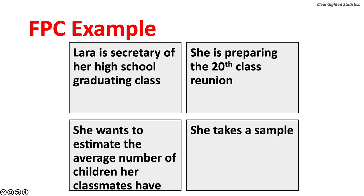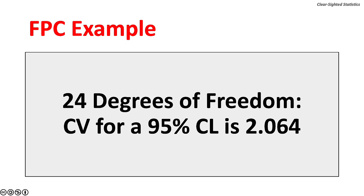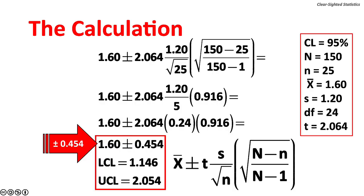Let's construct a confidence interval using the finite population correction factor. Lara is secretary of her high school graduating class and is preparing for the 20th class reunion. She wants to estimate the average number of children her classmates have. The sample mean is 1.6 children and the sample standard deviation is 1.2 children. She takes a sample of 25 graduates from a population of 150 graduates. There are 24 degrees of freedom (25 minus 1). The critical value for T at a 95% confidence level is 2.064. The FPC is 0.916, which reduces the width of the confidence interval. The 95% confidence interval is 1.6 children, plus or minus 0.454 children.